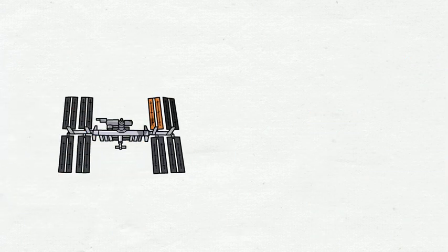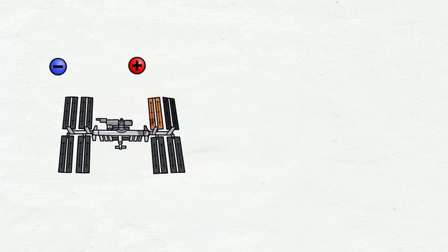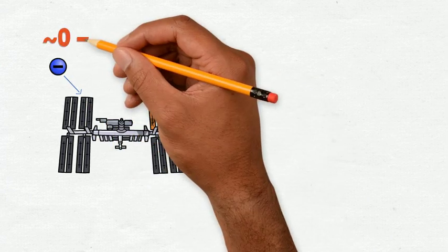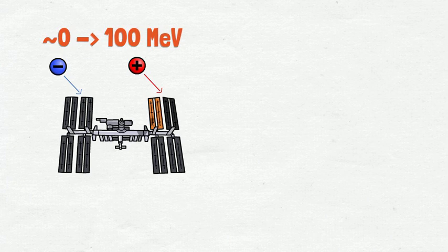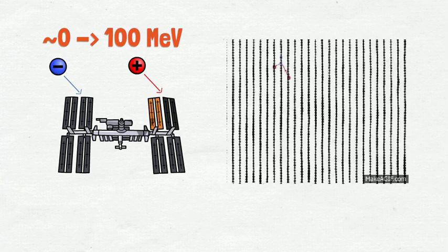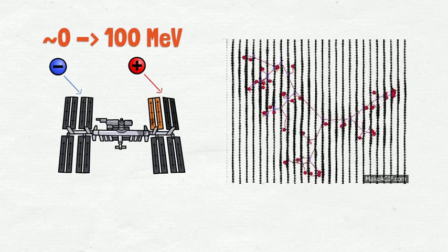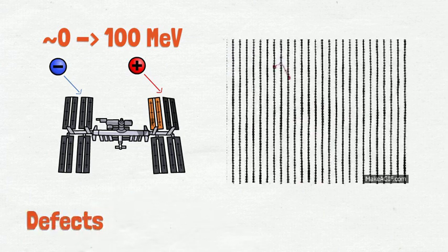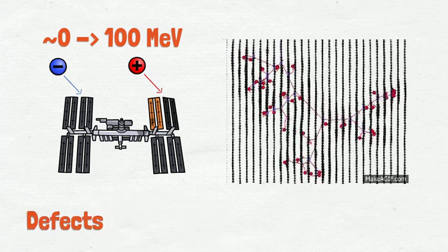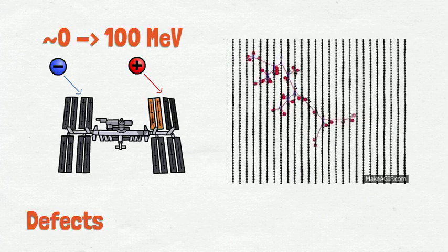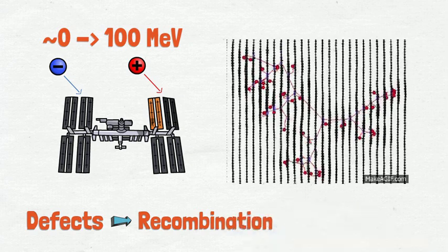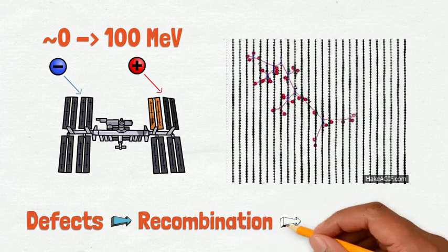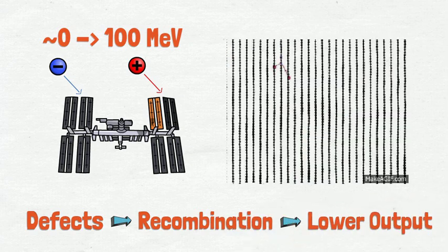When launched into orbit, satellites are bombarded with electrons and protons with energies that go from almost zero to hundreds of mega-electron-volts. When these particles collide with the solar cell, they displace the atoms from their original positions and introduce defects in the material. The type and quantity of defects created depends on the properties of the incident radiation, but in general they contribute to a premature recombination of free charge carriers and thereby reduce the electrical output of the solar cell.